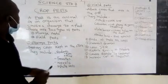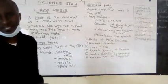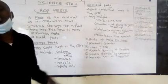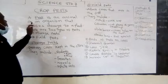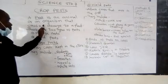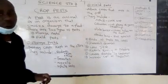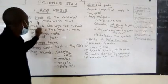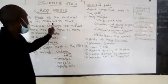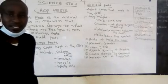First, we have to give the meaning of the word pest. What is crop pest? A pest is an animal or an organism. When we say animal or an organism, this one must be a living thing. So a pest is an animal or an organism that causes damage to a plant.